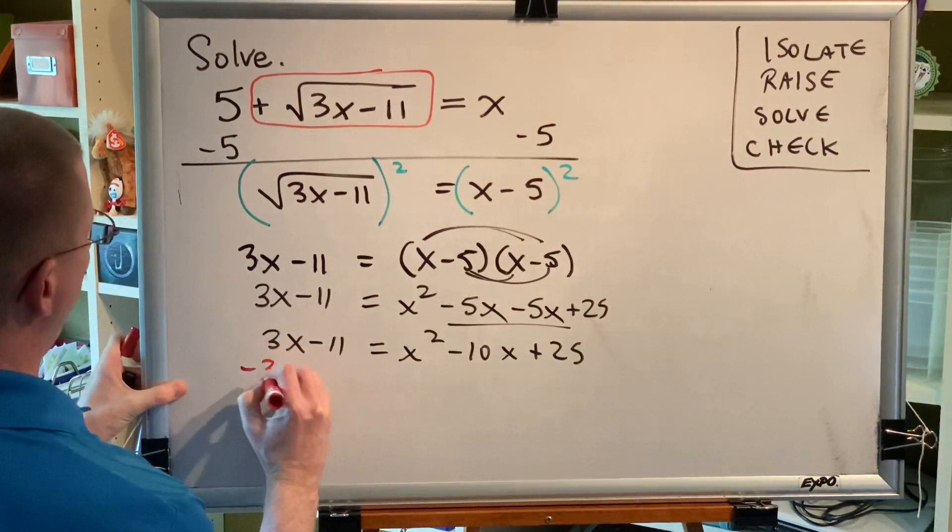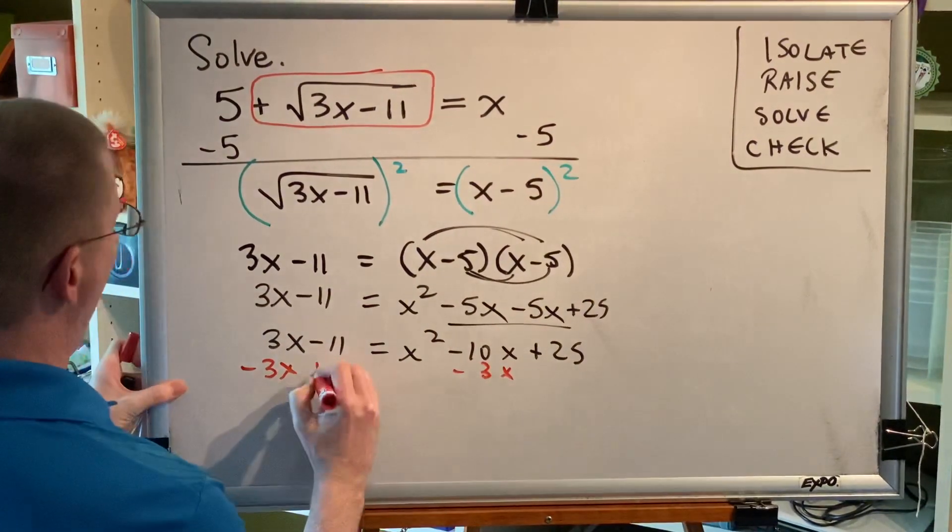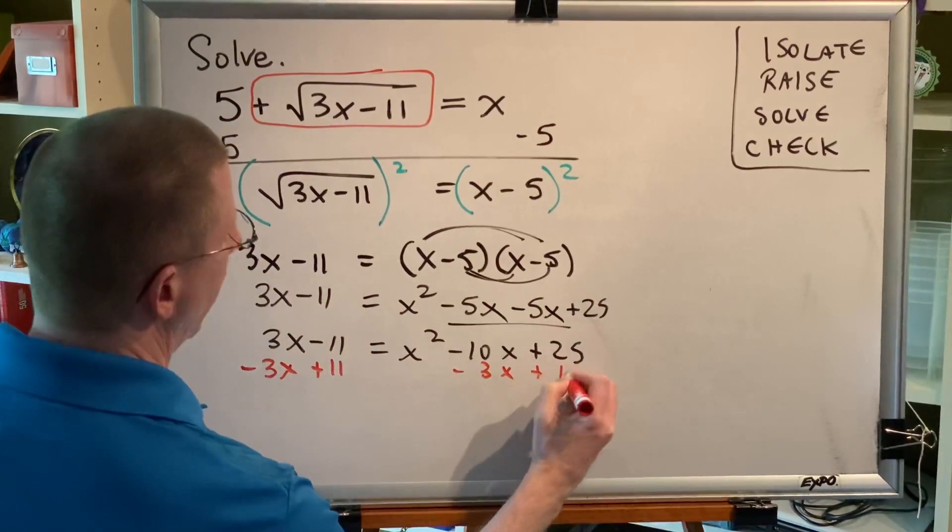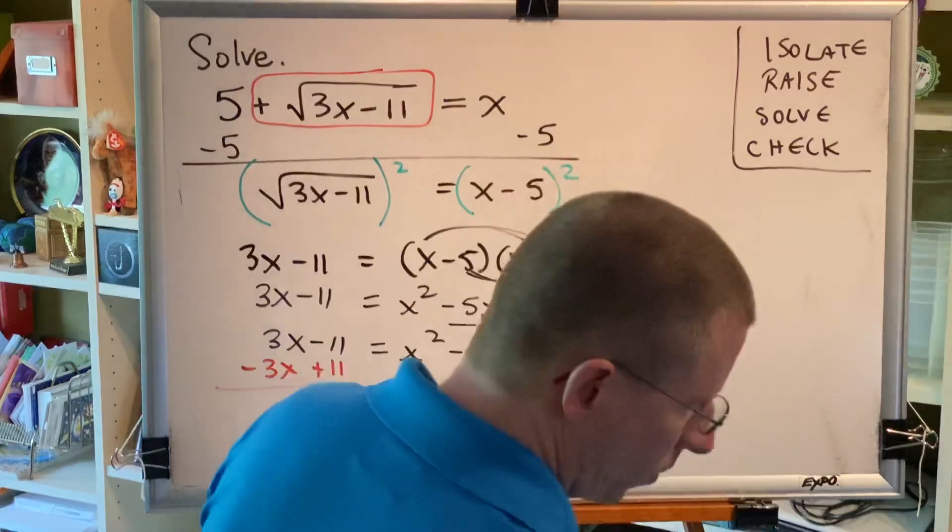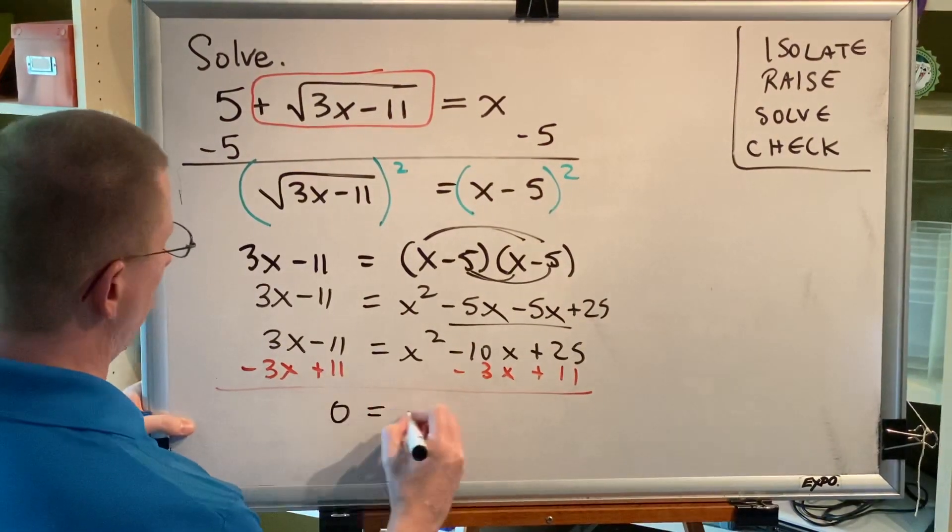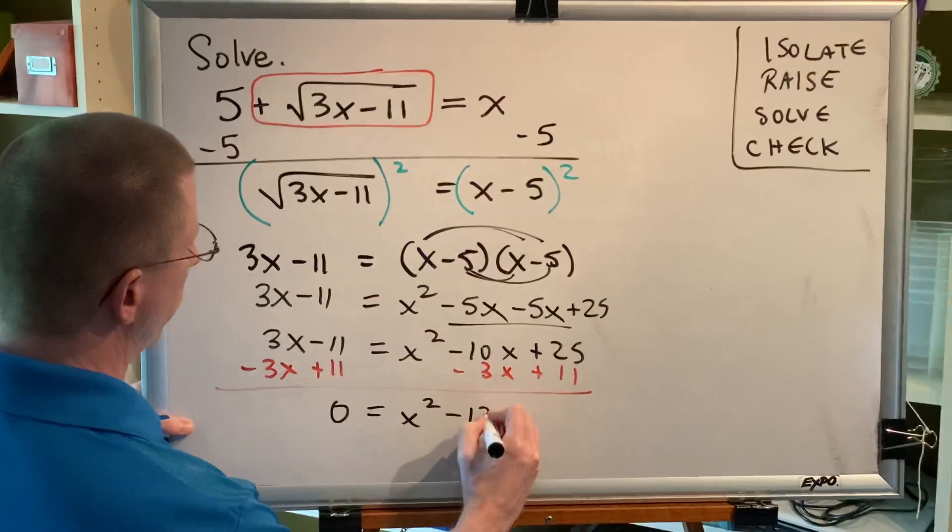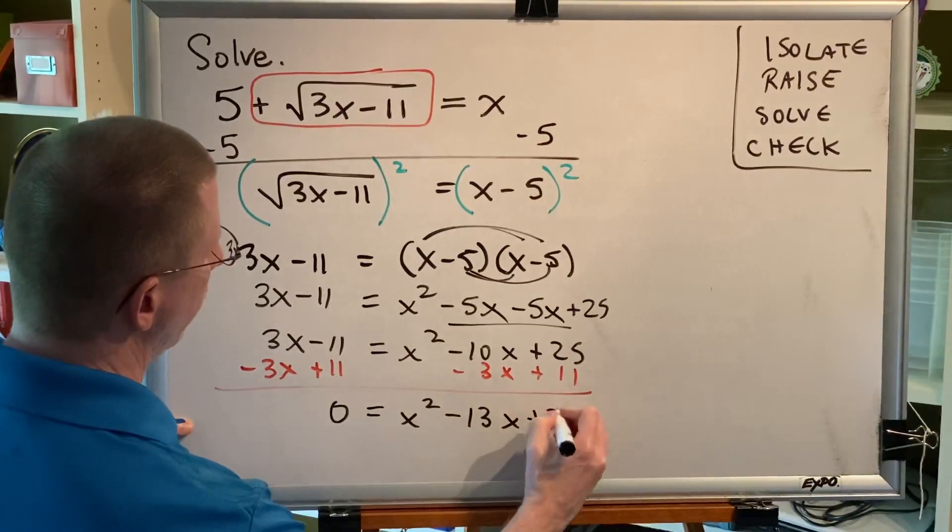We're going to subtract 3x on the left and on the right, and we're going to add 11 on the left and on the right. Notice how I'm writing these so that my like terms are together. This gives me zero equals x squared minus 13x plus 36.